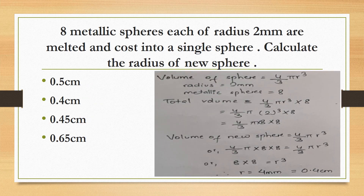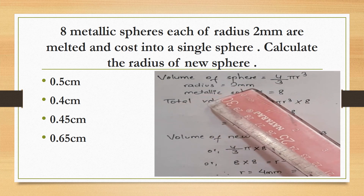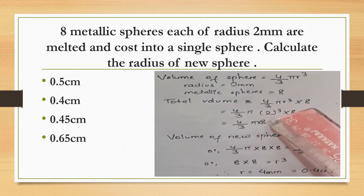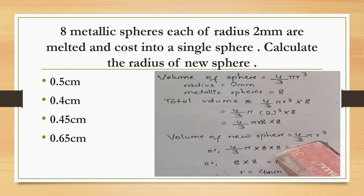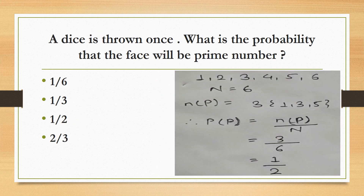8 metallic spheres, each of radius 2 mm, are melted and cast into a single sphere. Calculate the radius of the new sphere. The volume of a sphere formula is 4/3 π r³. The total volume of 8 spheres is 8 times 4/3 π (2)³. Setting this equal to 4/3 π R³ and solving, the radius of the new sphere is 4 mm.